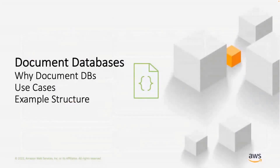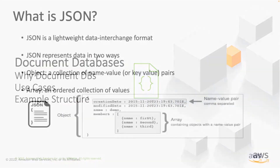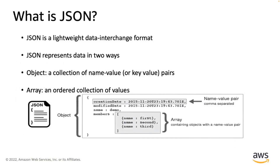Next, we'll get into document databases and talk about why document databases, use cases, and some example structure. The first question we like to cover is: what is JSON? JSON is a lightweight data interchange format. It's easy for humans to read and write, and easy for machines to parse and generate. JSON is a text format that is completely language-independent but uses conventions familiar to programmers of the C-family languages, as well as Java, JavaScript, Perl, Python, and many others.